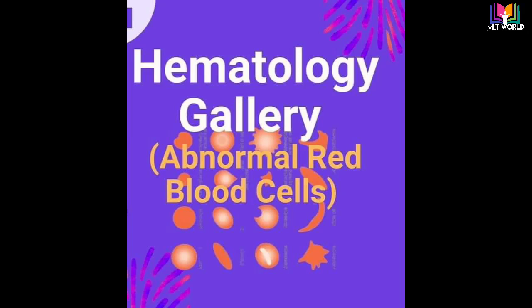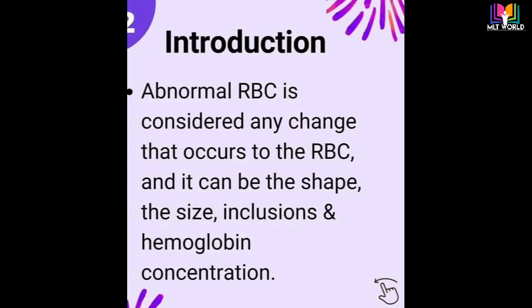Welcome back. Today in this video I will discuss about abnormal red blood cells, or what are the abnormalities we will see in RBC morphology. Red blood cells, which we call RBCs, are one of the most important cells in the blood. As you know, there are three blood cells found in the blood: white blood cells, red blood cells, and platelets.